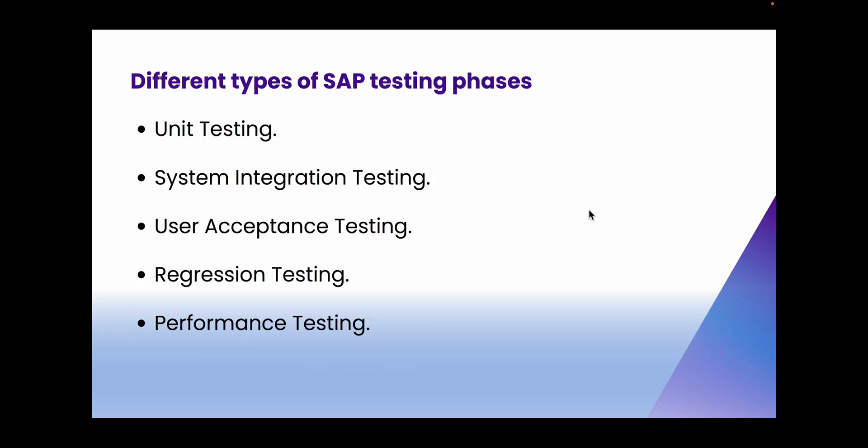What are the different types of SAP testing that are available? There are five different types of testing involved when it comes to SAP projects and operations: unit testing, system integration testing or SIT, user acceptance testing or UAT, regression testing, and performance testing.